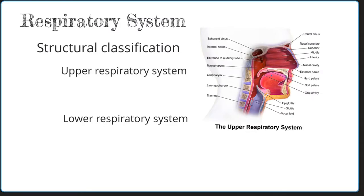The upper respiratory system includes the nose and all its structures, and the pharynx, which includes the nasopharynx, the oropharynx, and the laryngopharynx. When you refer to an upper respiratory infection, you are thinking mostly of congestion that occurs in the facial region.